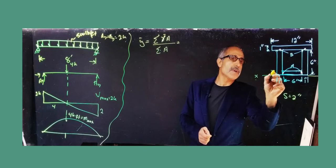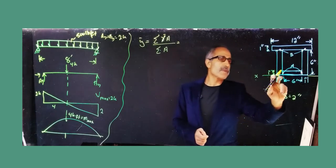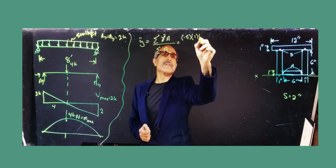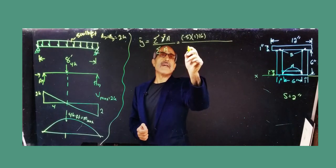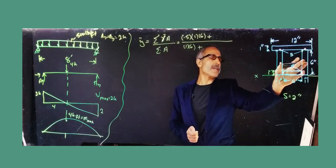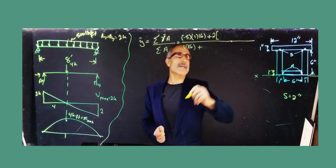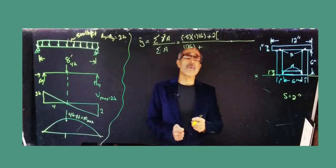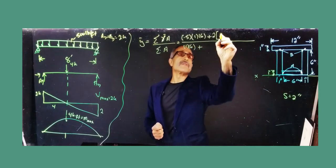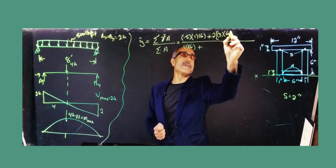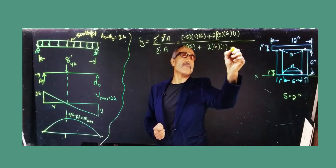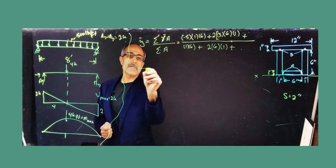For the bottom piece: it's one inch thick, so the distance from the reference to its center is 0.5 inch, and the area is 1 × 6 inches. For the two side pieces: there are two of them, so multiply by 2. The six-inch height means the center is at 3 inches from the bottom, and the area of each is 6 × 1.